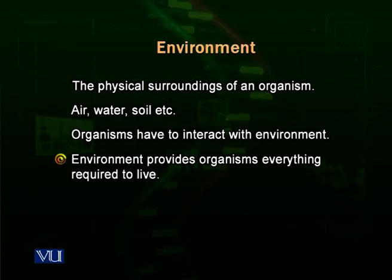Environment provides the organism all those things which are required to live — that is food. Every organism gets food from the environment. Shelter: every organism has to get shelter and protection from the environment. For example, human beings, the most advanced organisms, live in houses. Cats and dogs have their own places. Birds live on trees and sometimes have nests for bringing up their young. Bears and lions have caves. Organisms also have to interact with other organisms present in the environment. So environment is everything in the surroundings providing the organism with food, shelter, and relationships.